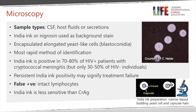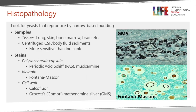Patients who have persistently positive India ink results on treatment — this signifies treatment failure usually. It can be a helpful test but it does take quite a long time to clear, particularly in patients with HIV disease who have very high numbers of cryptococci in the spinal fluid. Patients with HIV sometimes have cryptococci with very small capsules and they can look like lymphocytes, which can be a misleading image microscopically.